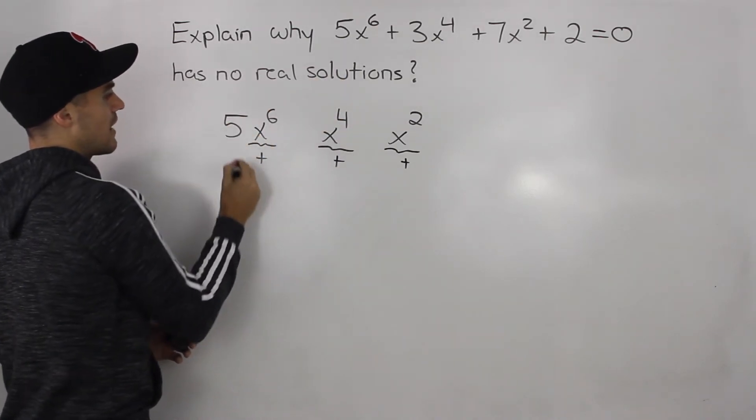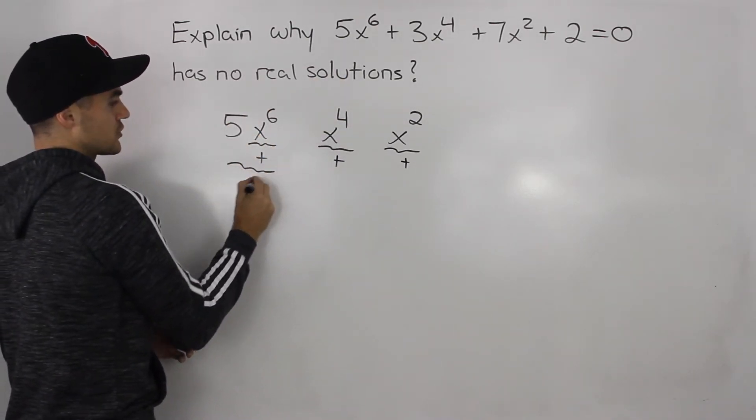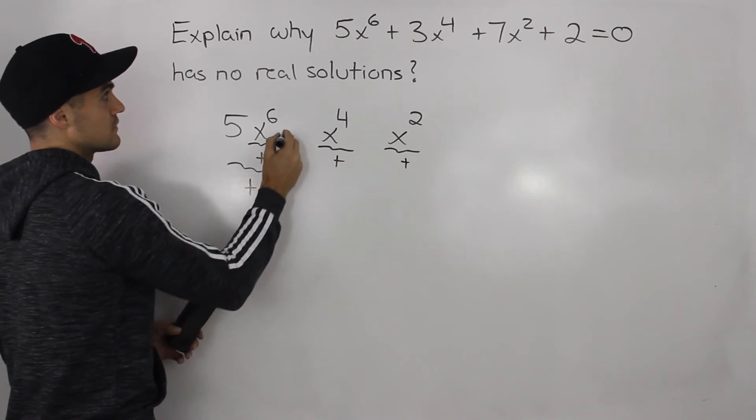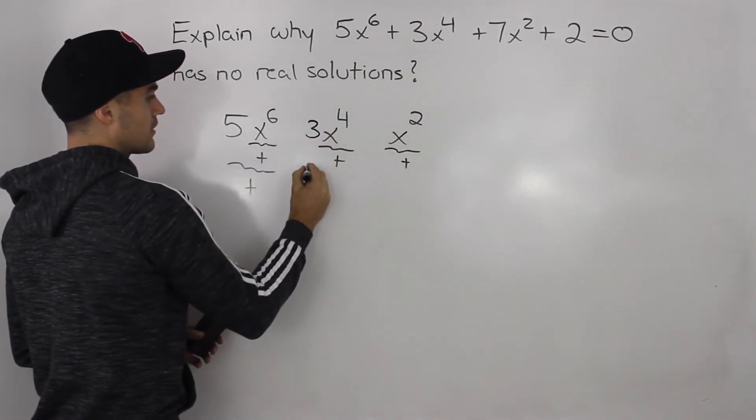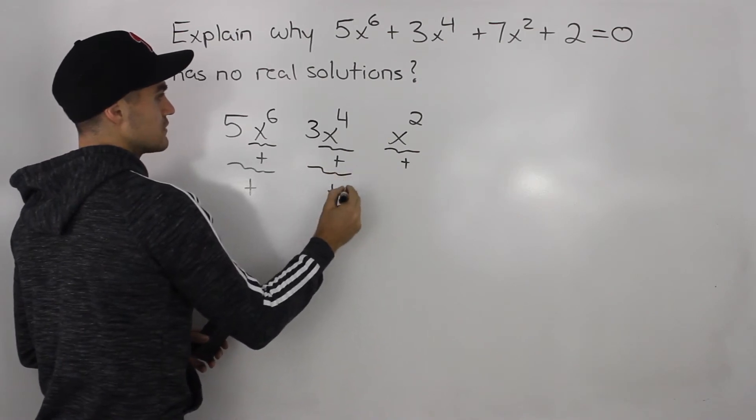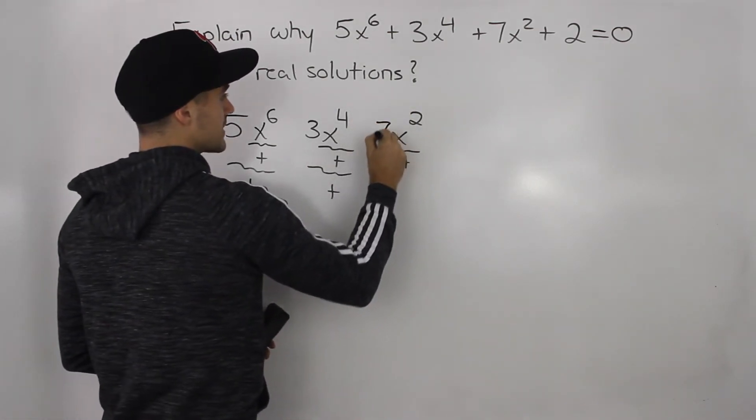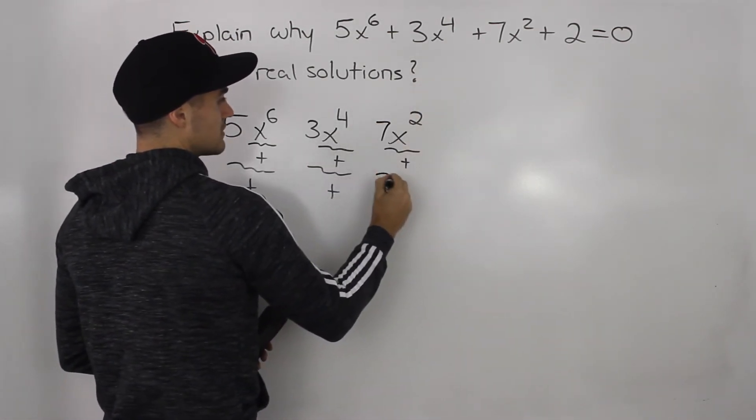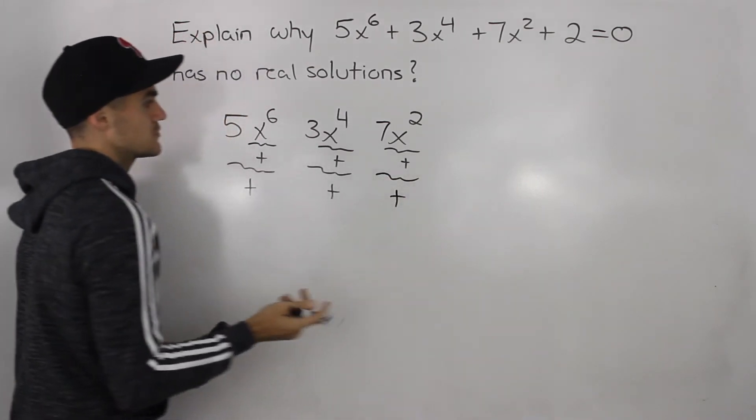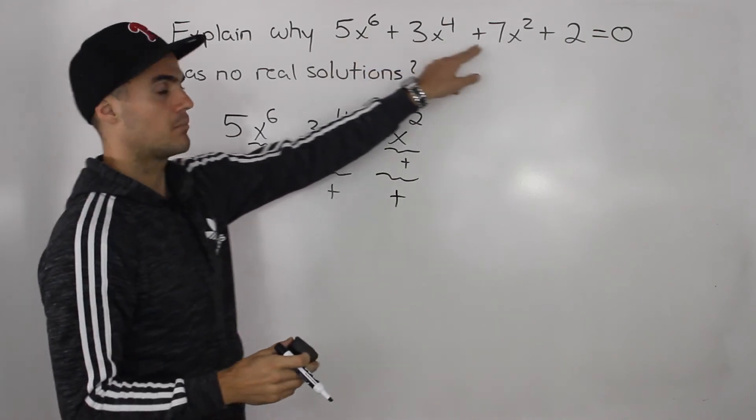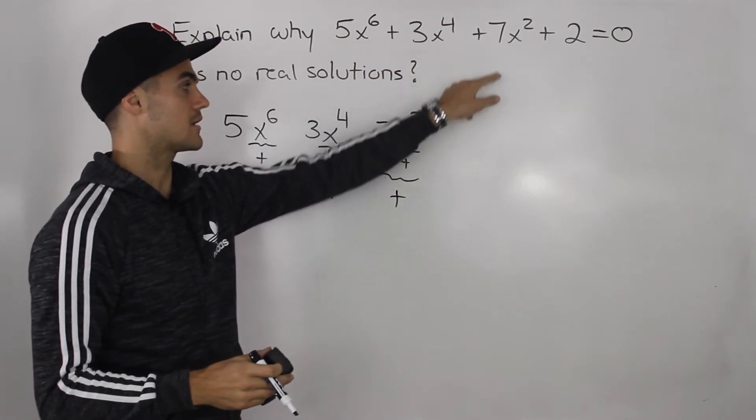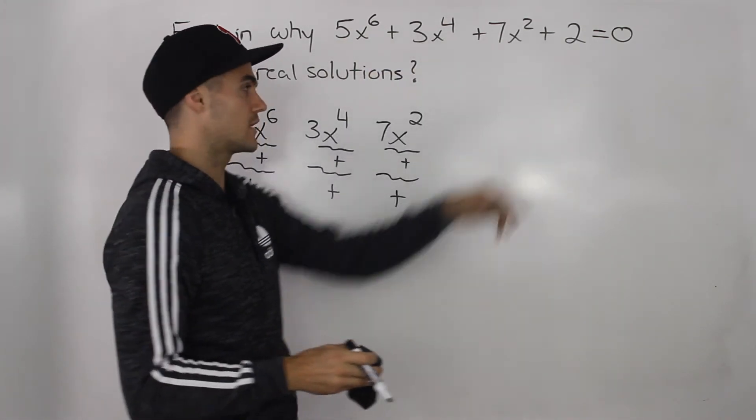If we multiply this by 5, then this whole term is going to be positive. If we multiply this by positive 3, like we're doing up here, that whole term will be positive. If we multiply this by positive 7, this whole term will be positive as well. So we're basically adding up three positive numbers all the time, and then we're adding another positive number, 2.